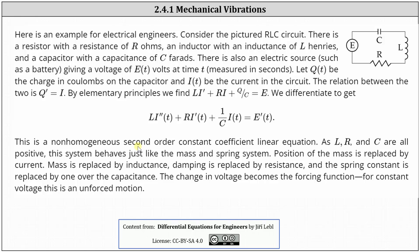Notice this is a non-homogeneous second-order constant coefficient linear equation. As L, R, and C are all positive, this system behaves just like the mass and spring system. Position of the mass is replaced by current, mass is replaced by inductance, damping is replaced by resistance, and the spring constant is replaced by one over the capacitance. The change in voltage becomes the forcing function. For constant voltage, this is an unforced motion.